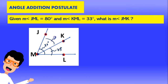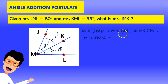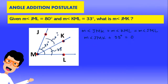JMK is what they're asking us to find. We have to remember the postulate: the measurement of angle JMK plus the measurement of angle KML equals the measurement of angle JML. JMK is the unknown, KML is 33 degrees, and JML — the whole thing — is 80 degrees.